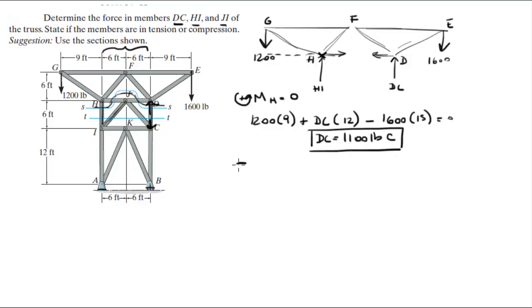Now that we have DC, it becomes a very easy problem. Sum of the forces in the Y is equal to zero, so you know that minus 1200 plus HI plus DC minus 1600 is equal to zero. So when you solve for HI, you get that HI is equal to 1700 pounds, and it's also positive so it was going up - up, down, which means it's also in compression.